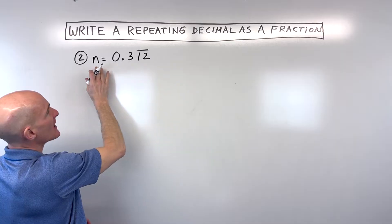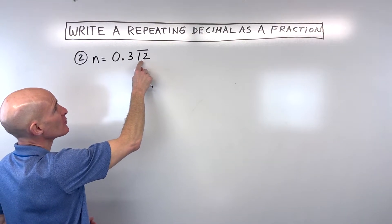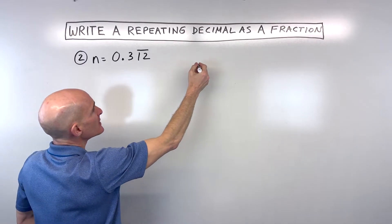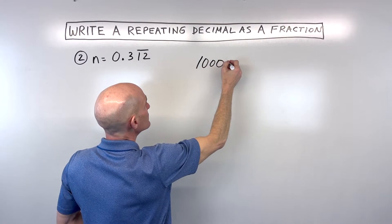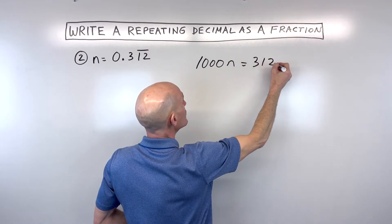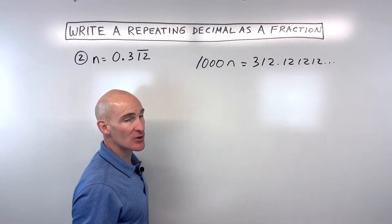And let's multiply both sides of this equation by 1000. So by multiplying by 1000, we're going to move this decimal place three places to the right. So 10, 100, 1000. So that's going to give us 1000 times our number n is equal to 312.121212. And it keeps going, right?